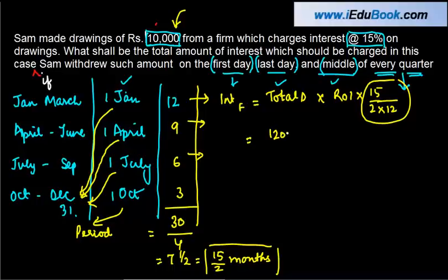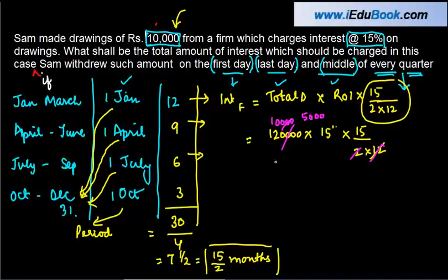My total drawings are 40,000, my rate of interest is 15% into 15 divided by 2 into 12. Twelve will knock off, two will go into this 5,000 times. So 50 into 15 times 15 is 225, which gives us Rs. 11,250.